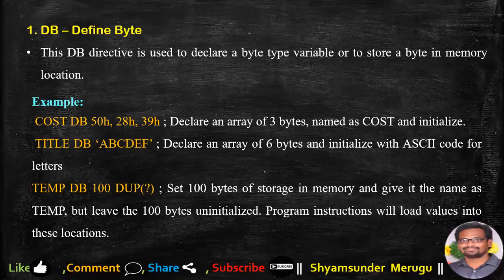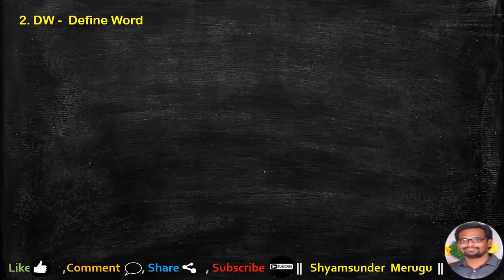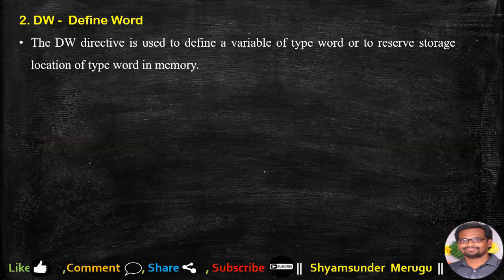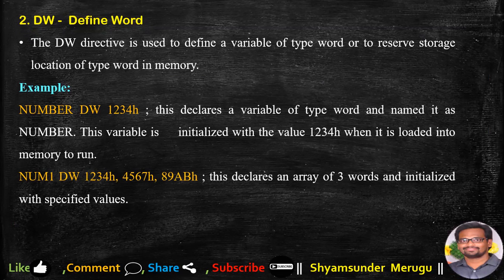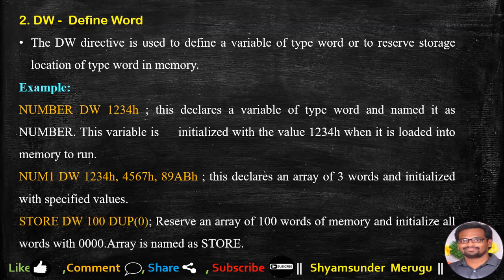The second assembler directive is DW, which stands for Define Word. The DW directive is used to define a variable of type word or to reserve a storage location of type word in memory. For example, 'number DW 1234H' declares a word-type variable named 'number' initialized with 1234H. 'Number1 DW 1234H, 4567H, 89ABH' declares an array of 3 words initialized with those values. 'store DW 100 DUP(0)' reserves an array of 100 words and initializes all words with 0000.